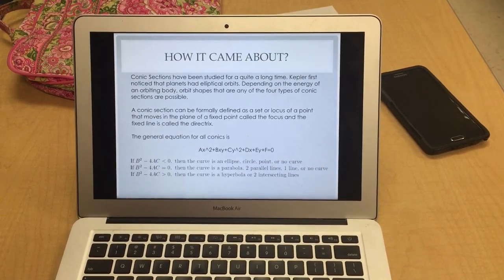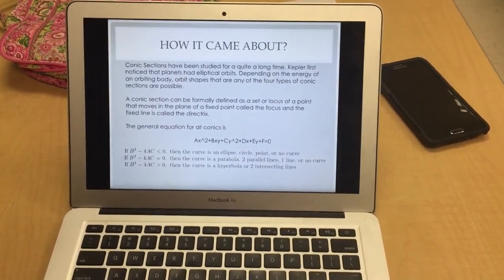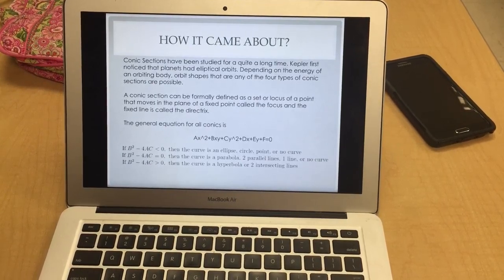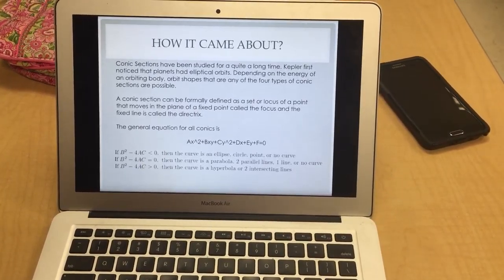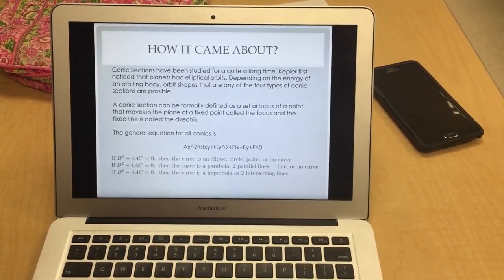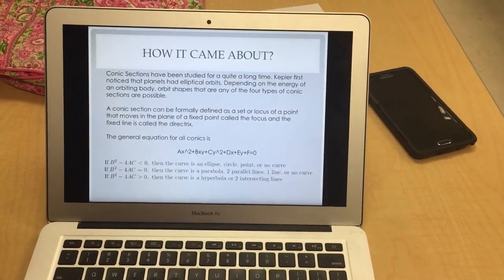Okay, how it came about. Conic sections have been studied for quite a long time. Kepler first noticed that planets had elliptical orbits. Depending on the energy of an orbiting body, orbit shapes that are any of the four types of conic sections are possible.